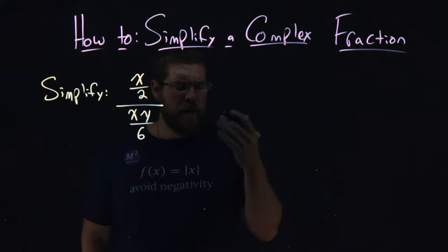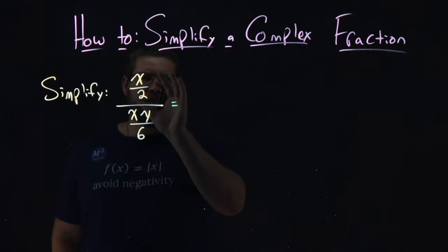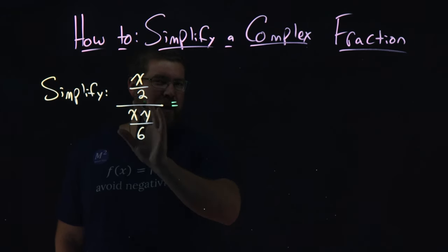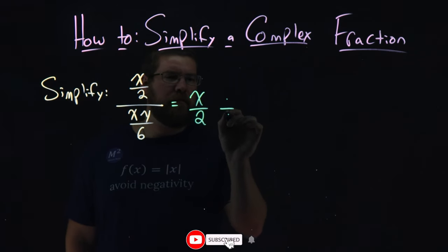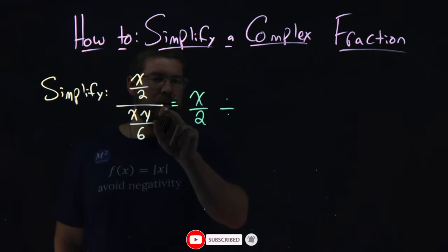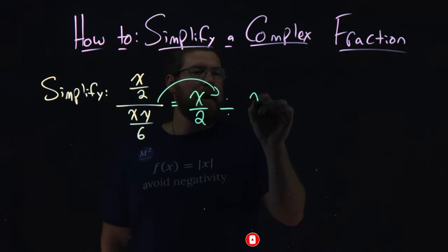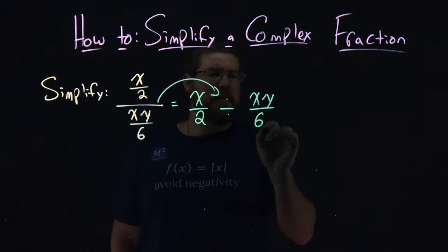We have to simplify. I find it's easiest to rewrite this fraction as such: x over 2 divided by, with that division symbol right here that's linking to this right here, xy over 6.